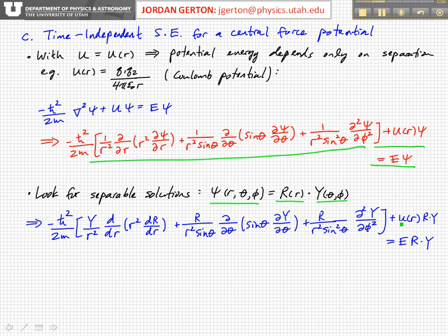We take the potential energy, multiply it by psi, which is big R times Y, and that is equal to, on the other side, the total energy times psi.